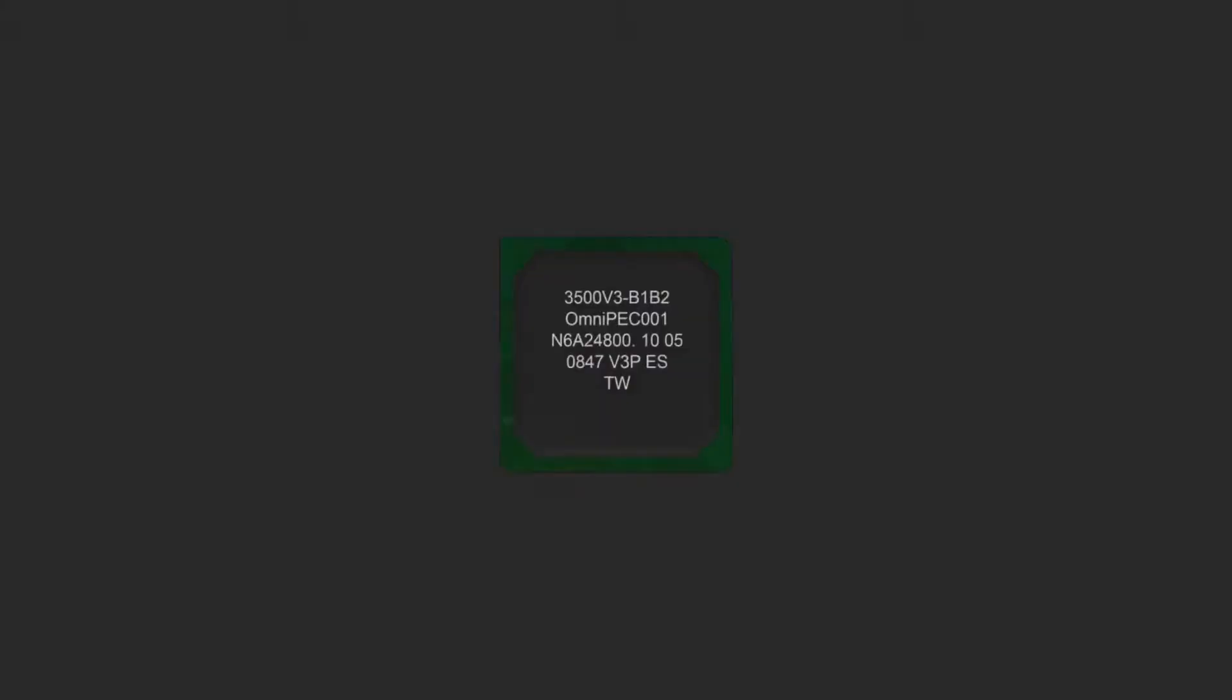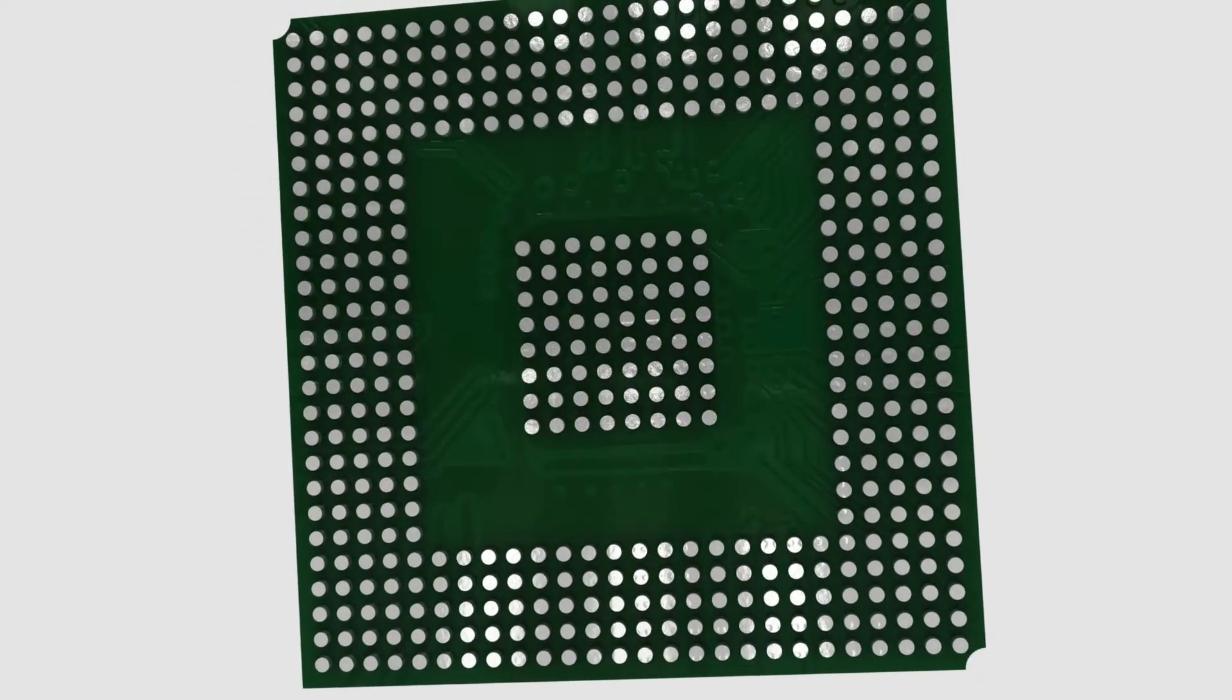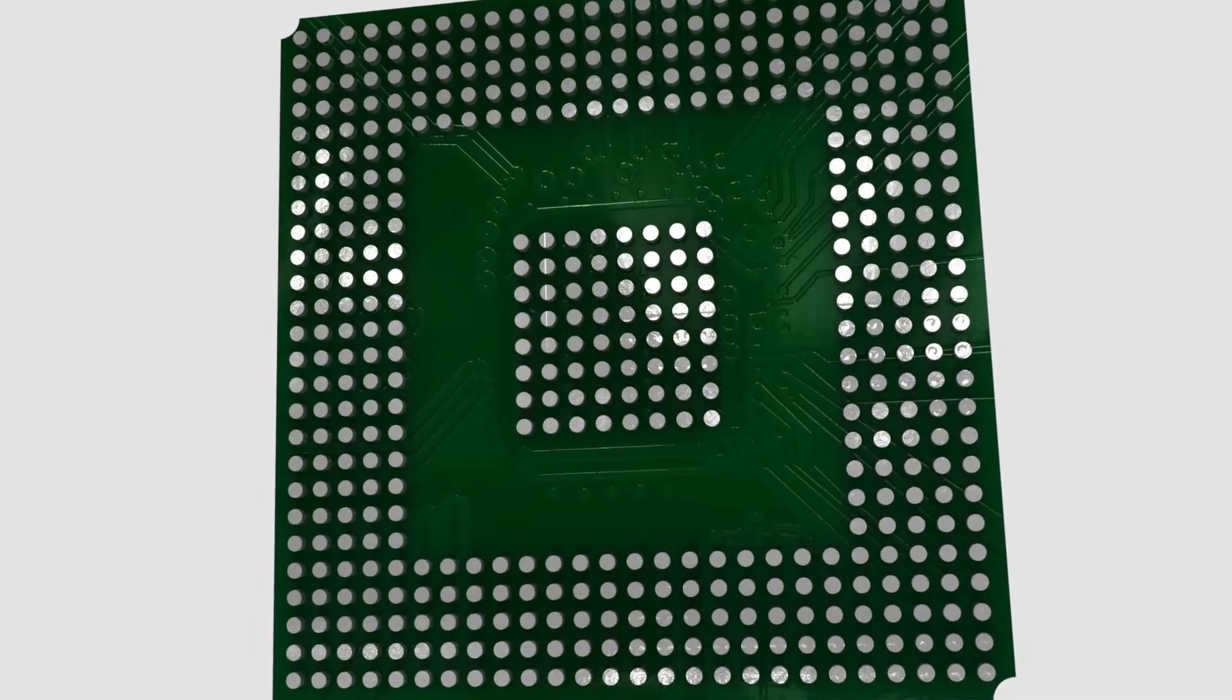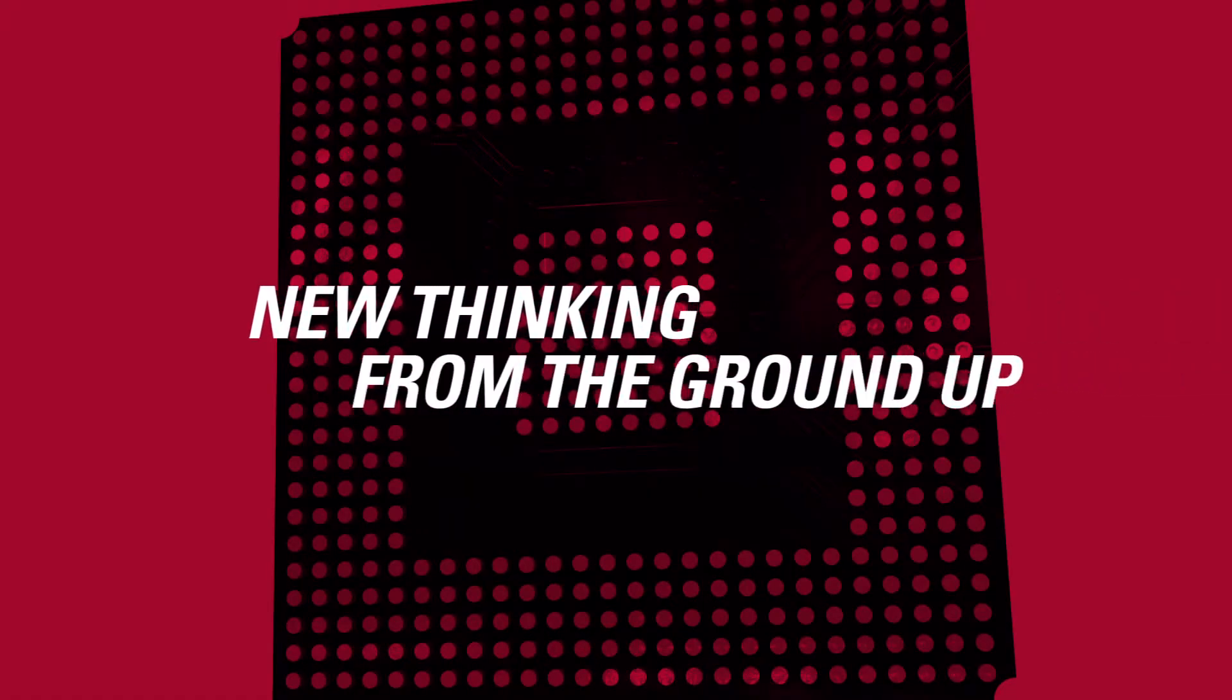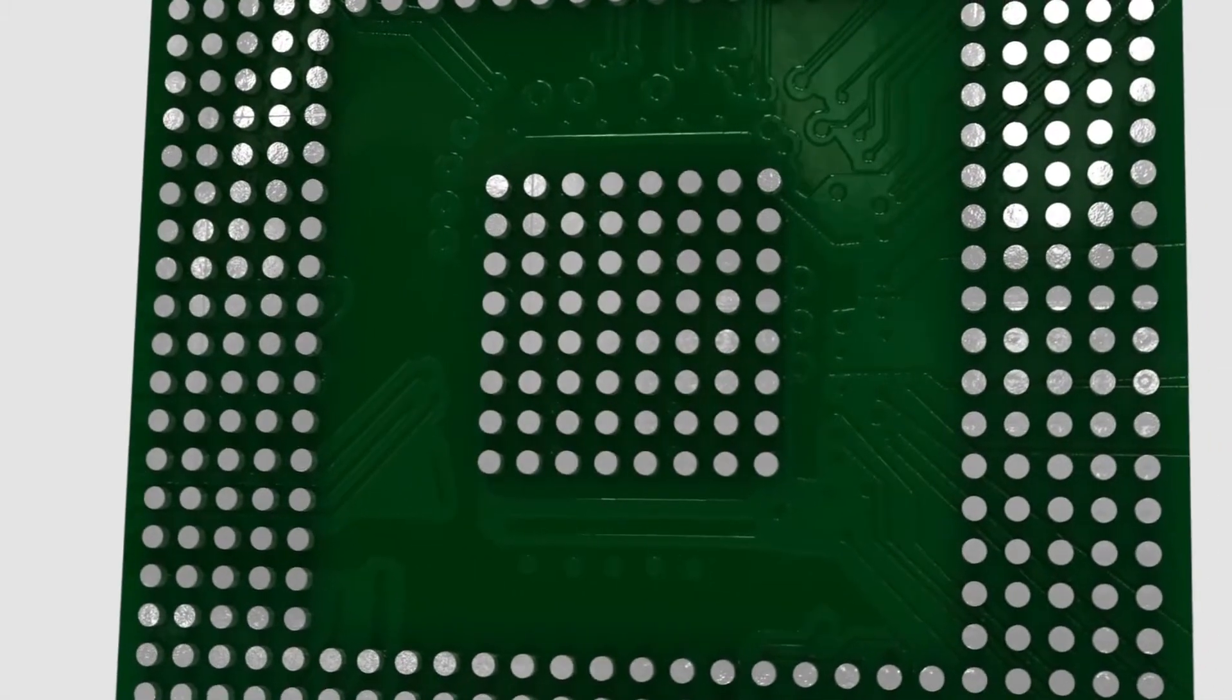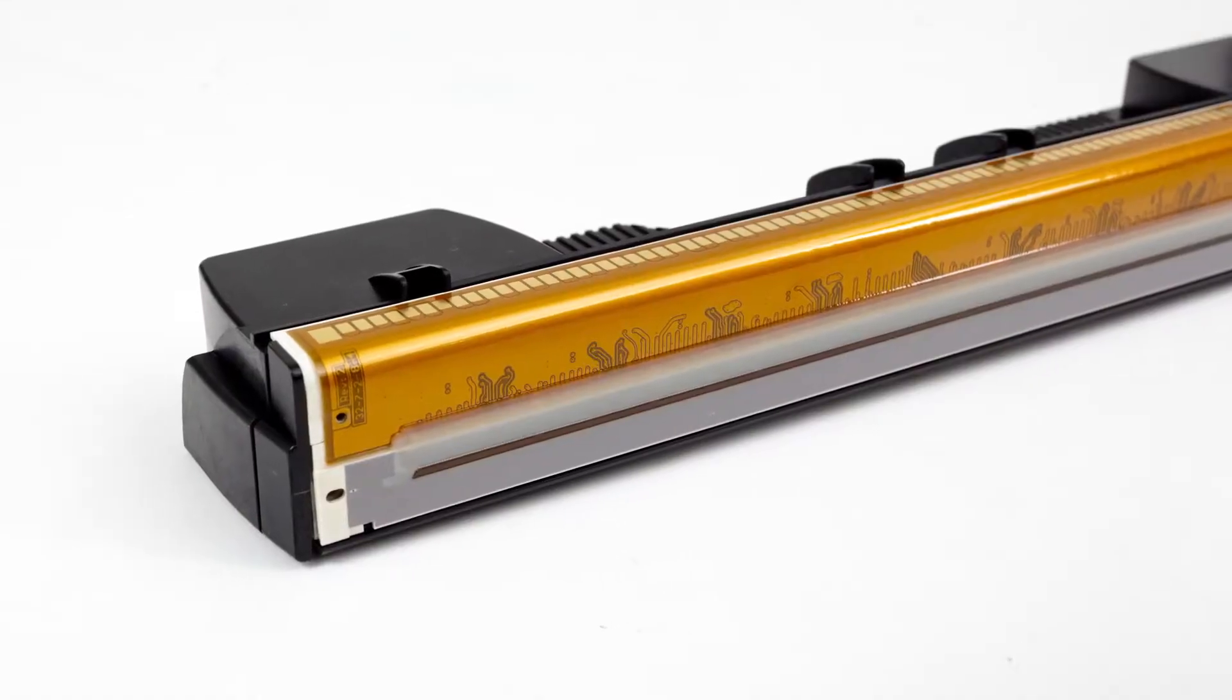When you create a print head as fast as Memjet's, you need a super-fast controller chip to drive it. And since one didn't exist, we created one capable of driving a high-speed print pipeline that achieves 60 page per minute speed.